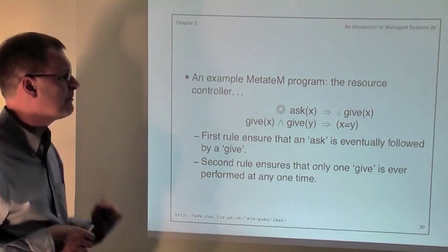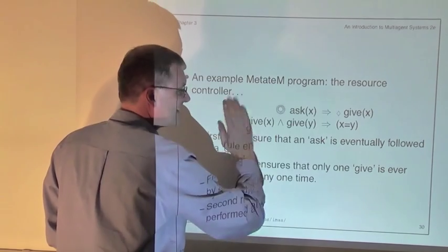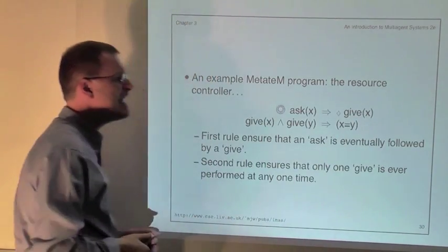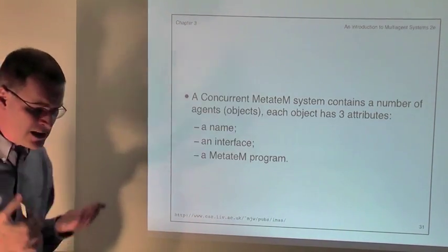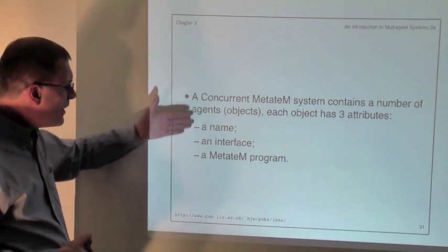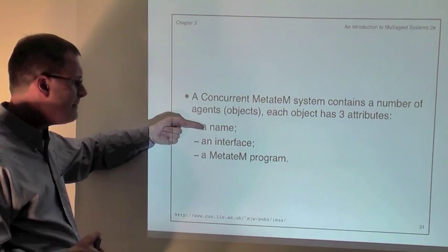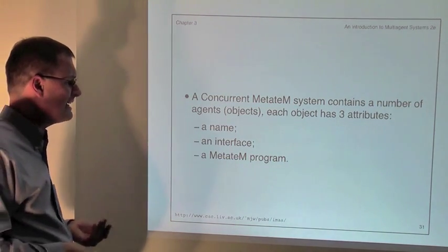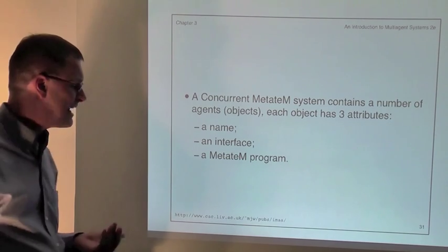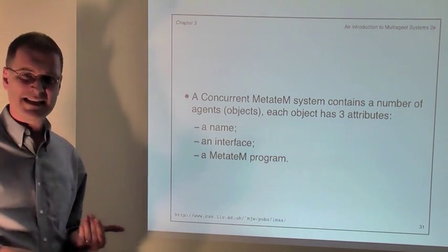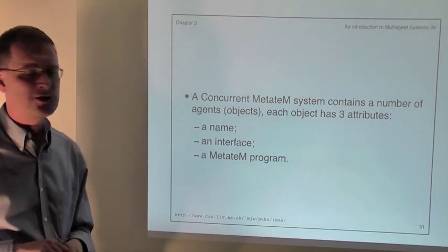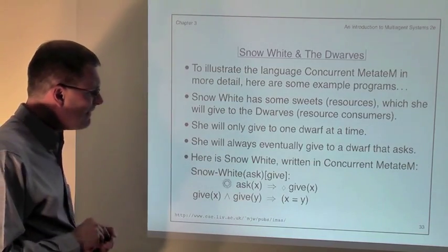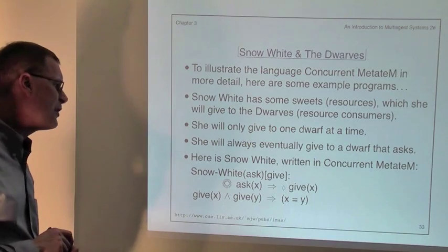This is a Concurrent MetateM program — a bunch of rules of the form past implies future. To turn programs into agents in Concurrent MetateM, we give them a name and an interface. The name uniquely identifies them in the system, and the interface defines the messages the agent will send and receive. In Concurrent MetateM, messages are just simple predicates. Let's look at the resource controller dressed up as Snow White and the Seven Dwarfs.